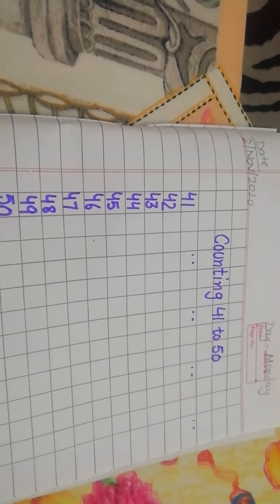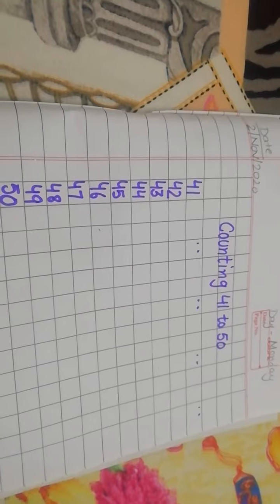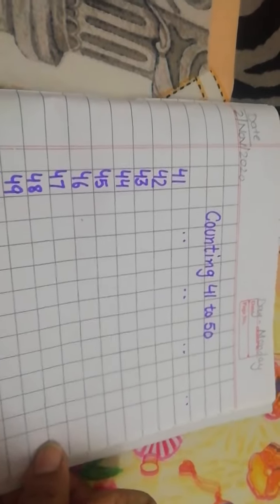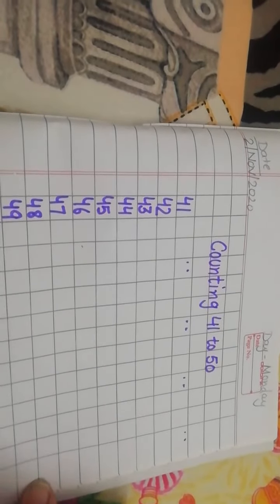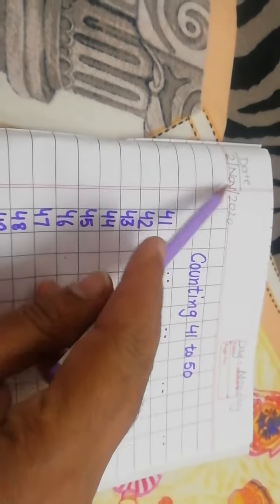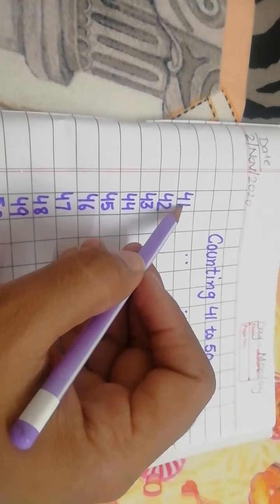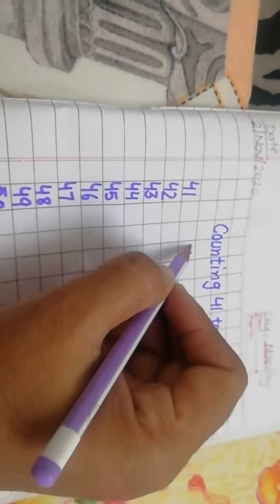Good morning dear students, welcome to math class. Today I will do counting 41 to 50 while speaking and writing. First of all, you will write the date. Next is 41. You will write here 4-1, 41 in each box.